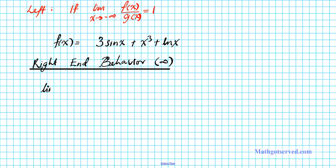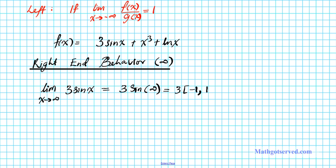For the first addend function, we look at the limit as x approaches infinity of 3 sine x. Plugging in infinity, we have 3 sine of infinity. The sine function fluctuates between 1 and negative 1 no matter how far you go — it just oscillates. Distributing the 3, this function fluctuates between negative 3 and 3 at infinity. It doesn't go beyond that, so this function is bounded and is not a candidate.